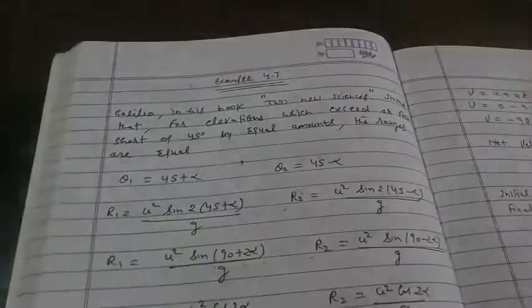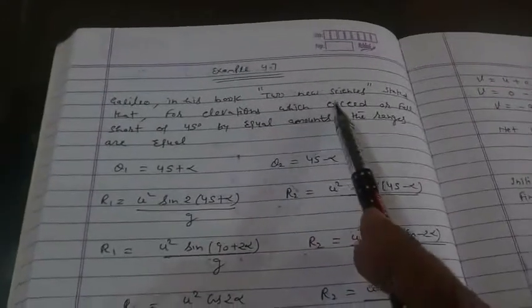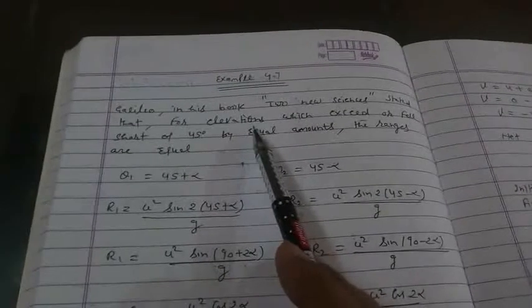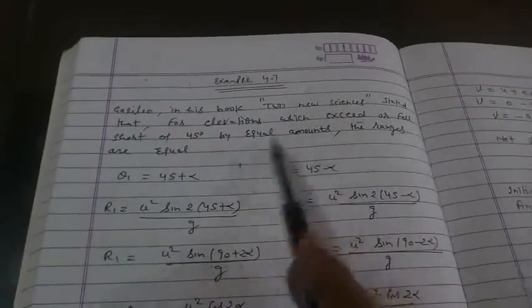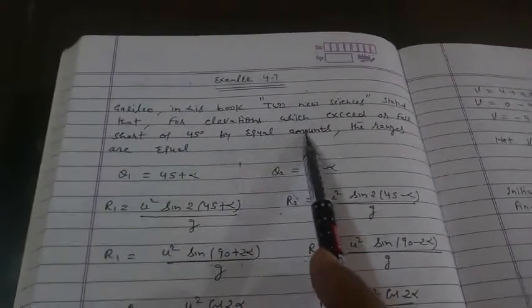Example 4.7. Galileo in his book Two New Sciences stated that for elevations which exceed or fall short by 45 degrees, the ranges are equal.